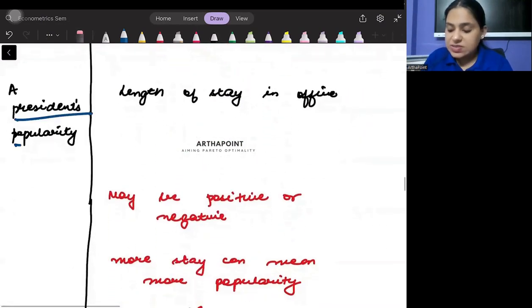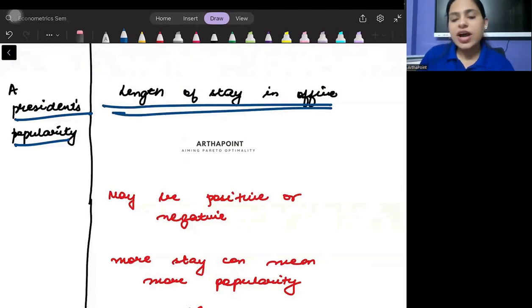Now this is a president's popularity and length of stay in the office. Try to think that this can be both positive or negative. Sometimes it may happen that when you stay for a longer period of time if you have been a good president your popularity will increase.